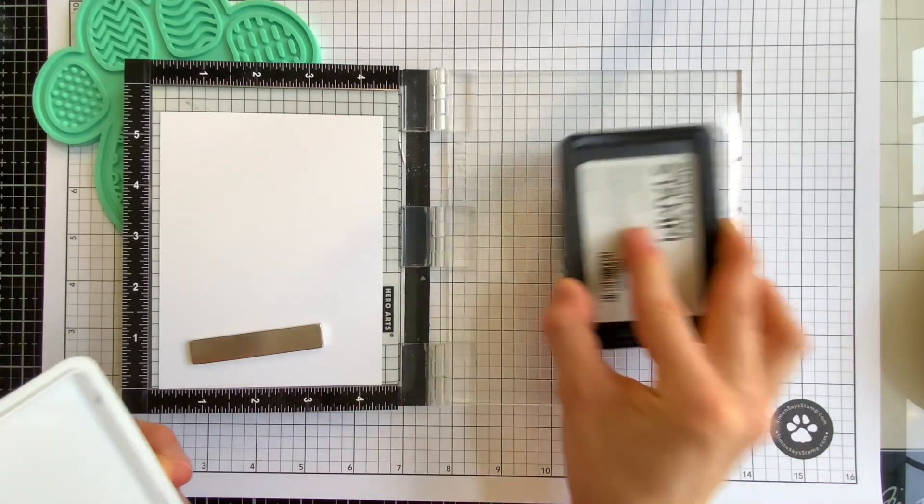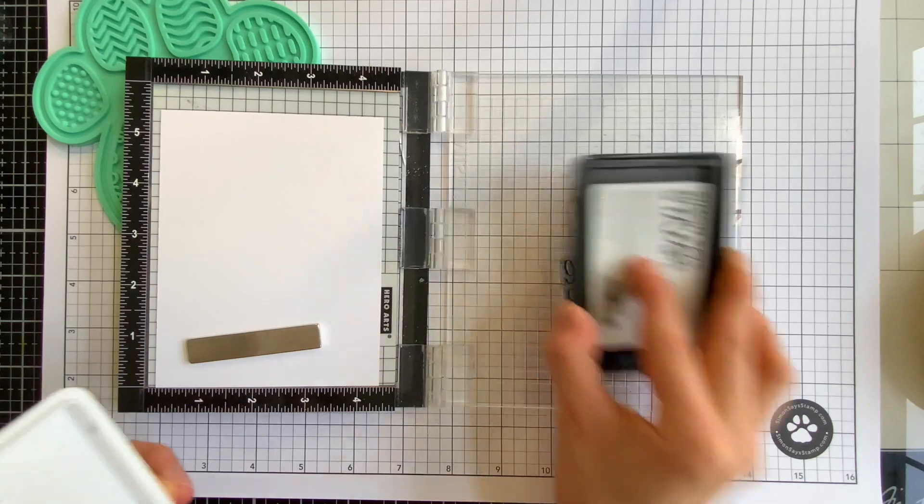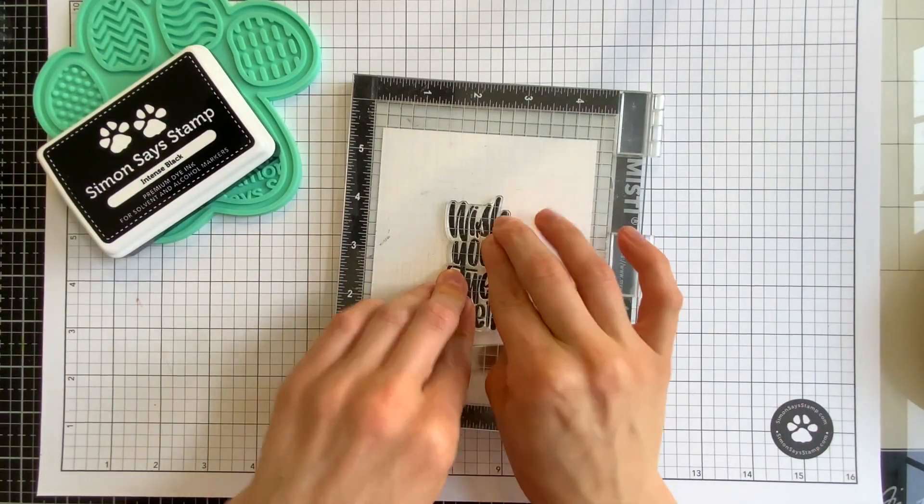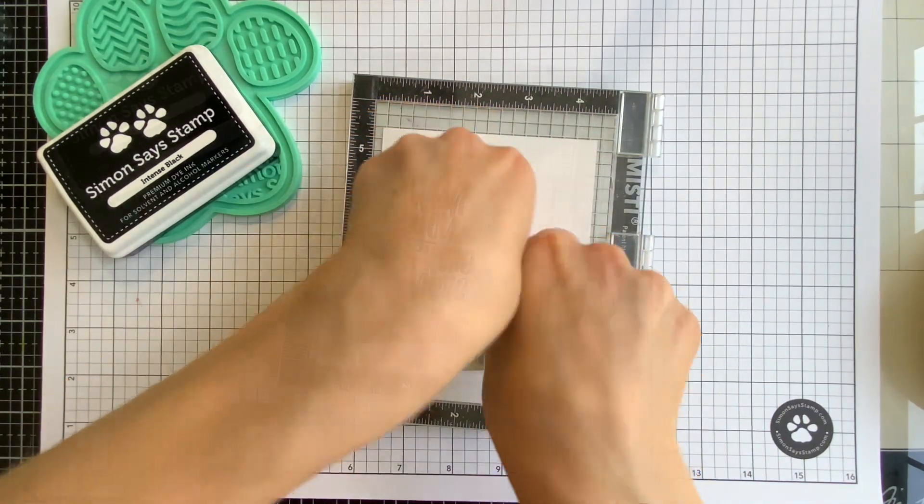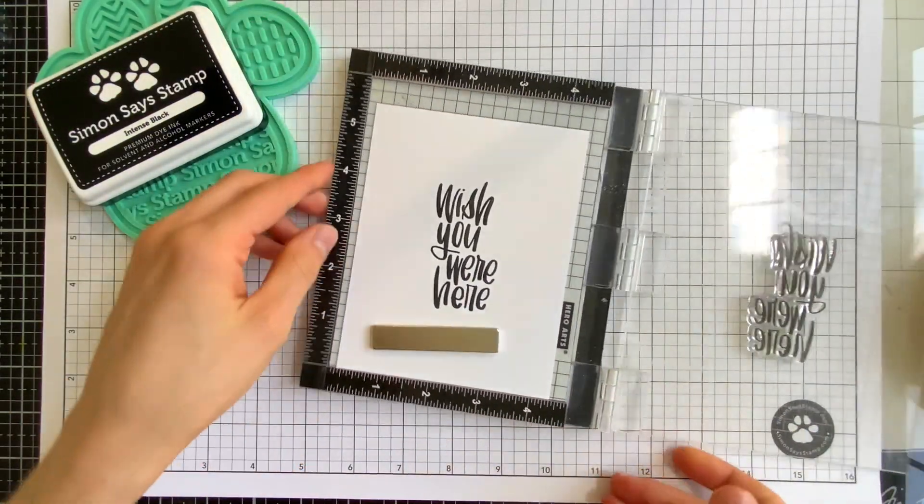watercolors, pencils, even solvent mediums. You won't have to worry about it bleeding either which is a really important feature. Like the name suggests, this is a true intense black ink that will give your stamping a beautiful crisp finish. This is the only ink pad I use when I craft period.